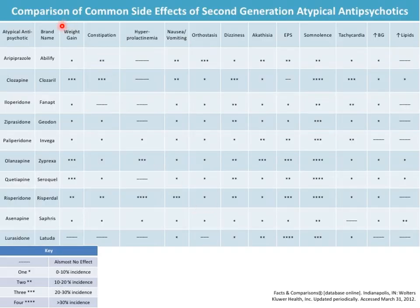Common atypical antipsychotics: aripiprazole (Abilify) — commonly used off-label for many conditions; clozapine — agent of last resort due to agranulocytosis risk; iloperidone (Fanapt) — a newer agent; ziprasidone (Geodon) — commonly used as IM injection in emergency medicine for acutely aggressive patients; paliperidone (Vega) — relatively newer; olanzapine (Zyprexa) — effective but carries the most metabolic side effects.